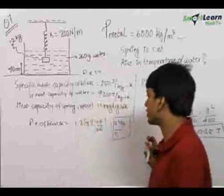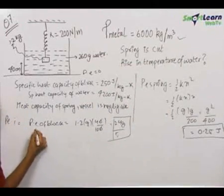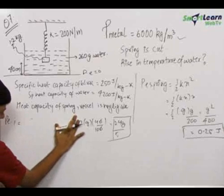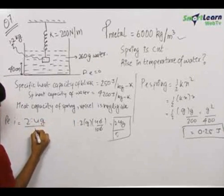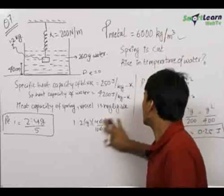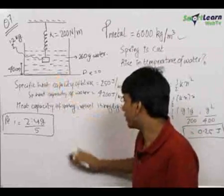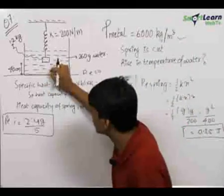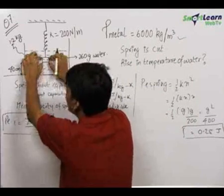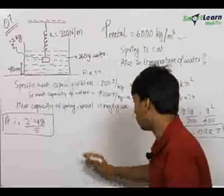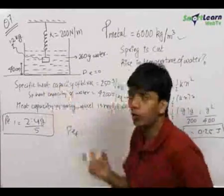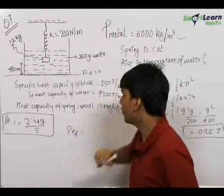Let the reference level have potential energy equal to zero. Initial PE of the system equals PE of block plus PE of the block of water at reference level, which is zero. So initial PE = 2.4g/5. For the final state, the block comes down to level zero so its PE is zero. But the displaced block of water, which replaces the block's original position, now has some potential energy. The mass of this water equals 1.2 kg (same as the block's weight equivalent).